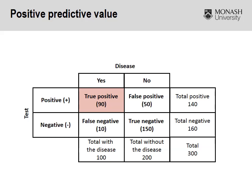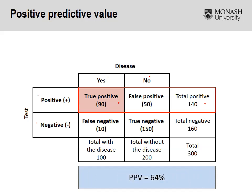With a hypothetical 2x2 table — disease positive or negative, and test outcome positive or negative — in order to calculate our positive predictive value, we take the number who tested positive and do have the disease, divided by the total number who tested positive. In this case, the positive predictive value is 64%. So basically, if you test positive to this particular test, you've got a 64% chance of actually having the disease or outcome of interest.